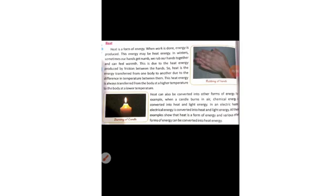When we turn on an electric heater, the electric energy is converted into heat and light energy. We use it to prepare food and other things. All these examples show that heat is a form of energy, and various other forms of energy can be converted into heat energy. For example, when we turn on a fan, electric energy is converted into heat energy.